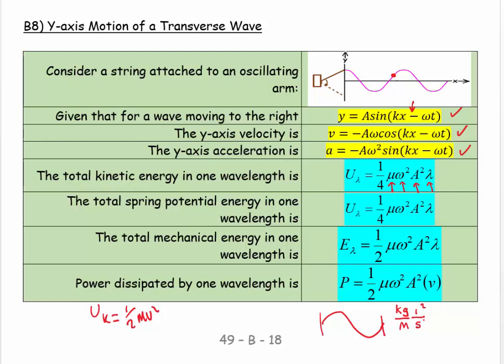So that's going to be that squared and that squared. And then I have my amplitude, which is meters, but it's squared. And if I have my wavelength, which is meters. So if I look at this, I'm going to get kilograms meters squared per second squared.